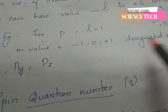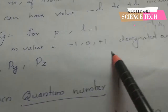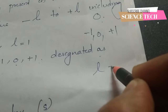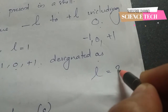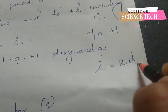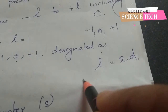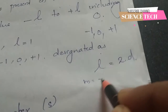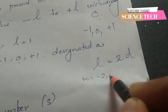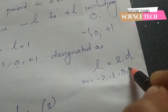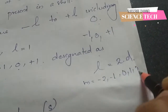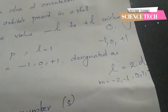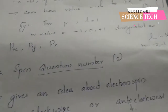The three p orbitals are designated as px, py, and pz. For the d orbital, l is equal to 2, so m ranges from minus 2, minus 1, 0, plus 1, plus 2 — giving 5 orbitals.